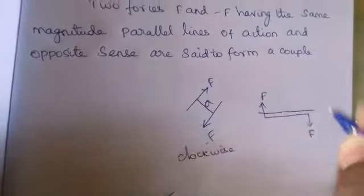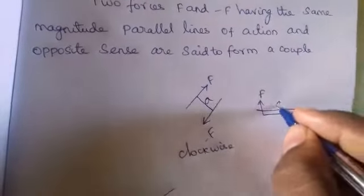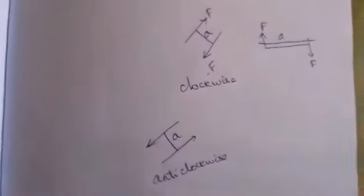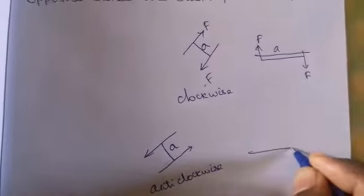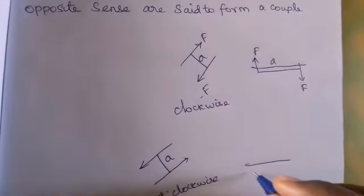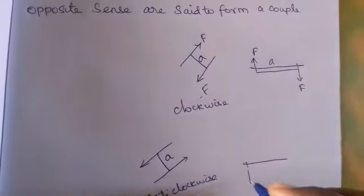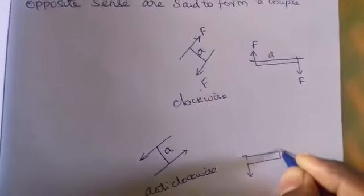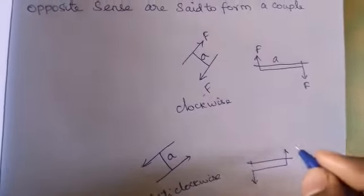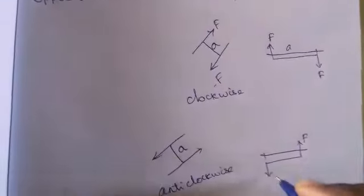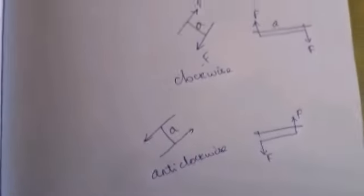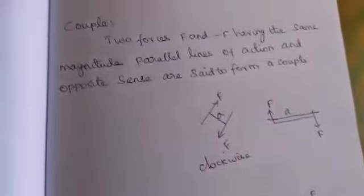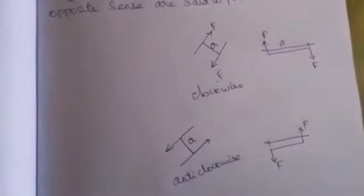For a vertical clockwise couple, force F acts downward at distance A. For a vertical anticlockwise couple, force F acts upward — this is the vertical anticlockwise couple.